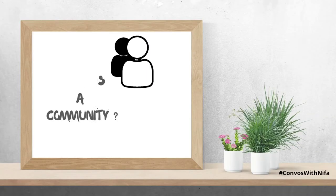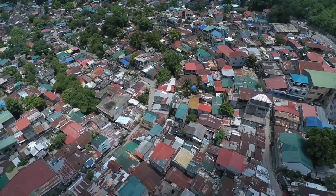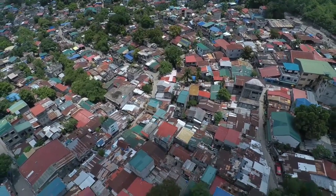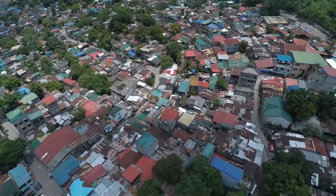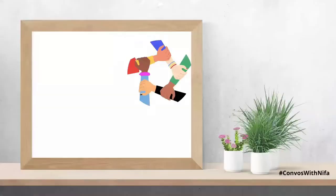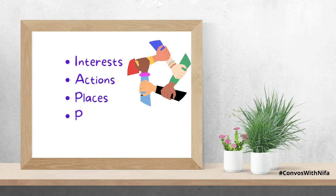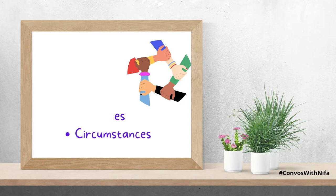What is a community to you? A community can be defined as a group of people living in the same area or a geographical location. On the other side, communities can also be defined by different types based on interests, actions, places, practices, and even circumstances.